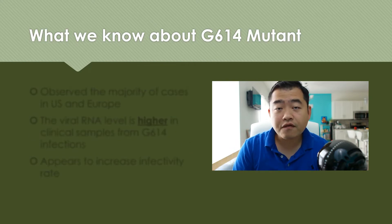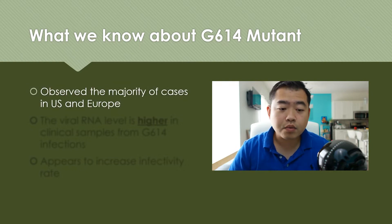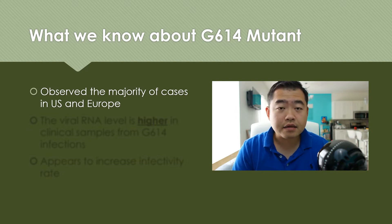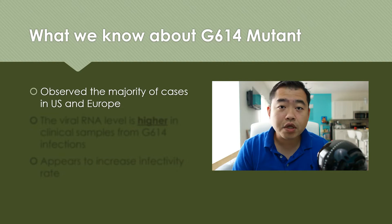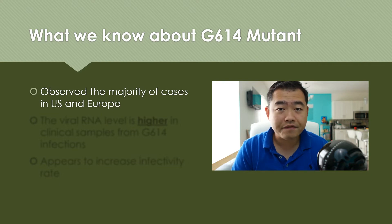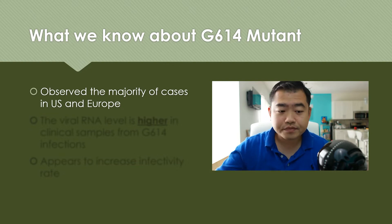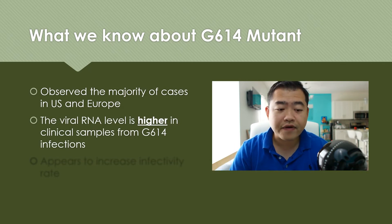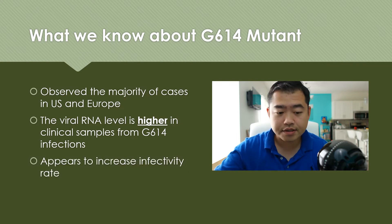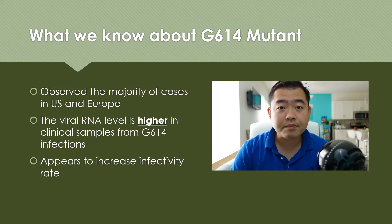So what do we know so far about this G614 mutant? We have seen that the majority of cases in the US and in Europe have this G614 mutation. And currently, some of the newer outbreaks in Asian countries have also been identified with this G614 mutation, which hadn't been seen a couple months ago. The viral RNA level appears to be higher in clinical samples collected with this mutation, and it appears to be increasing the infectivity of this disease.